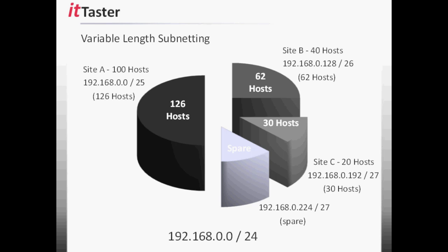We've used variable length subnetting to carve up the IP address space 192.168.0.0/24. We've made more efficient use of the address space — it meets the needs of each site in the example, and we also have spare addresses for future use. This is a simple example, but as with many aspects of IT, when it comes to variable length subnetting, taking the time to plan carefully is essential.